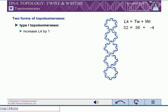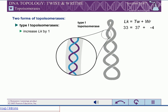Type 1 topoisomerases increase linking numbers in steps of 1. By introducing an additional twist, type 1 topoisomerases relax negative supercoils.